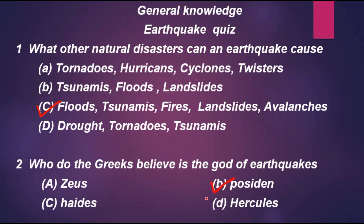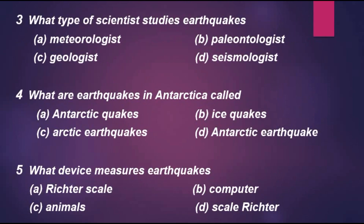Question 3: What type of scientist studies earthquakes? Option A: meteorologist. Option B: paleontologist. Option C: geologist. Option D: seismologist. The correct answer is D, seismologist. Question 4: What are earthquakes in Antarctica called? Option A: Antarctica quakes. Option B: ice quakes. Option C: architect quakes. Option D: Antarctica earthquake. The correct answer is option B, ice quakes.